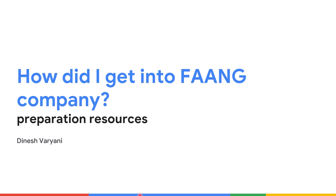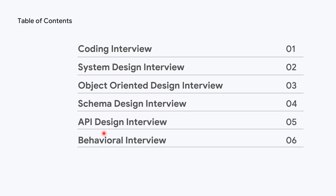Hello everyone. In this video, I am going to tell you about a few resources which I actually used that landed me a FAANG company. I prepared for six interviews: coding interview, system design interview, object oriented design interview, schema design interview, API design interview, and behavioral interview. Let's look ahead and see some of the resources I used for all these interviews.